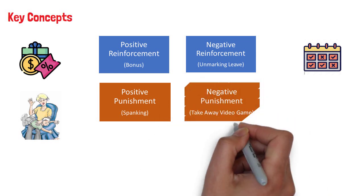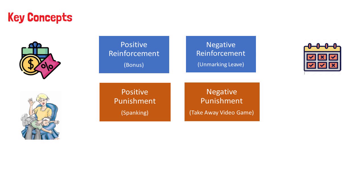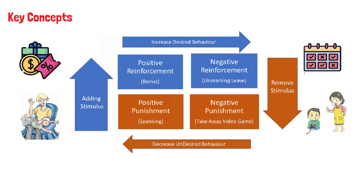4. Negative punishment, also known as punishment by removal, occurs when a favorable event or outcome is removed after a behavior occurs. Taking away a child's video game following misbehavior is an example of negative punishment.